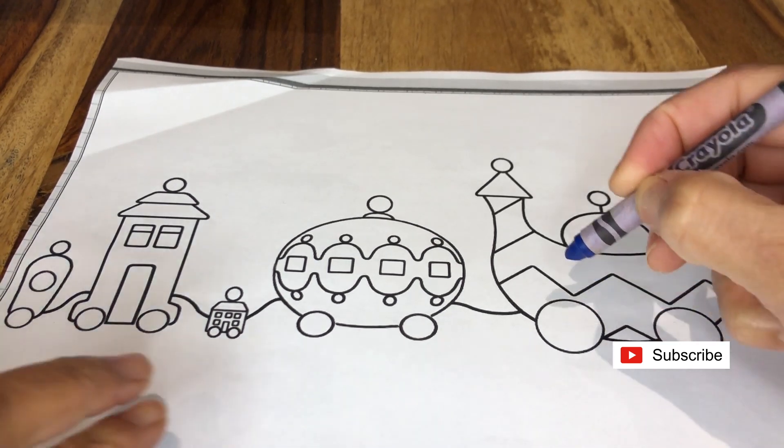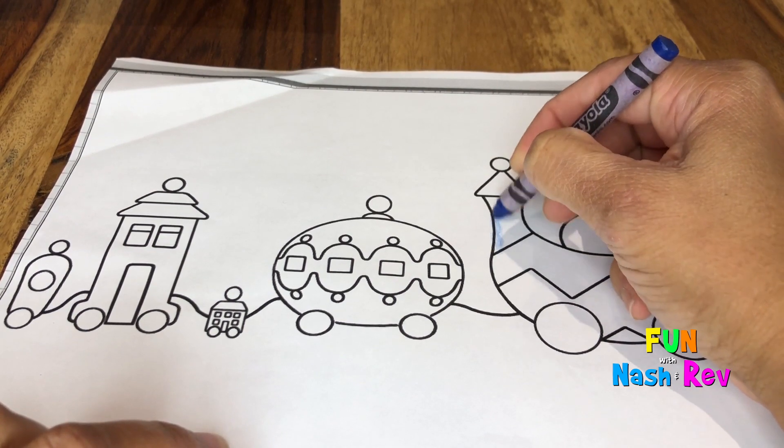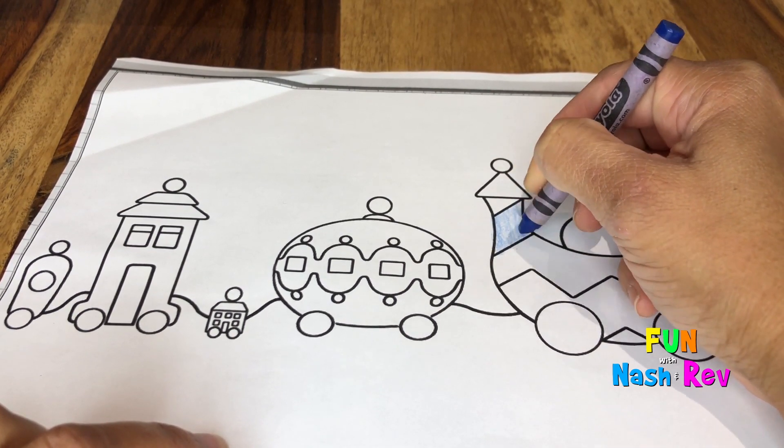I'm going to use cornflower, which is a nice color blue. Here it is. Let's see, let's color some of these stripes. Oh that's nice.